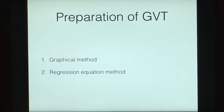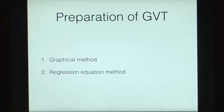There are two methods of preparation of volume tables: the graphical method and the regression equation method. When preparing volume tables, we are trying to get volumes in tabular form such that if we know one, two, or three parameters, we should be able to get the volumes. For a general volume table, we measure diameters, heights, and volumes and then use them in a tabular fashion.